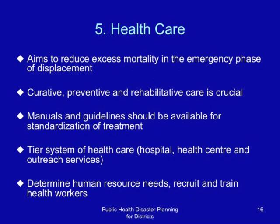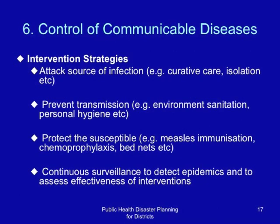Control of communicable diseases is very important during complex emergencies. Intervention strategies include attacking the sources of infection through curative care and isolation of highly infectious persons; preventing transmission through environmental sanitation, personal hygiene, and health education; and protecting susceptible persons through measles immunization, chemoprophylaxis for selected diseases, and provision of bed nets. There is need for continuous surveillance to detect epidemics and to assess effectiveness of interventions.